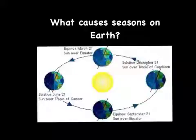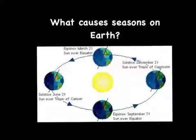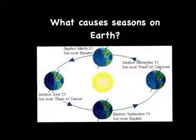Why do we have seasons on the Earth? The Earth is tilted at 23 and a half degrees, and that tilt of the Earth in its revolution around the sun is what causes seasons.